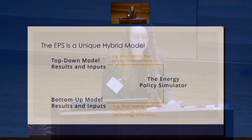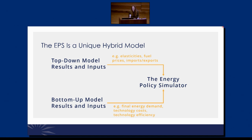The EPS is both a top-down and bottom-up model. Top-down models start with specifying the big picture — like how changes in population and GDP can affect energy demand — and work downward, drawing variables like elasticities or fuel prices. For bottom-up models, you start at the detailed level with final energy consumption and use, building up the system from there, taking variables like technology costs and efficiencies. These are all plugged into this highly interactive model so we're capturing what's going on on different ends of the system.